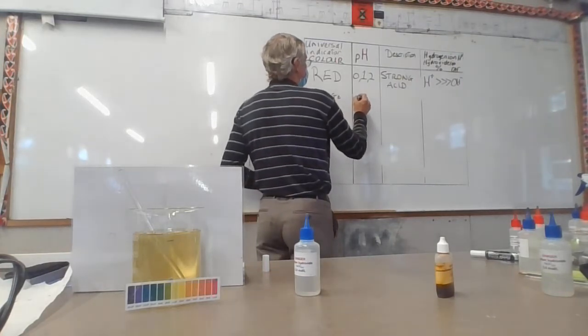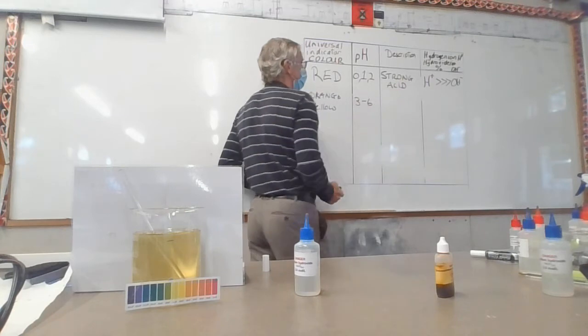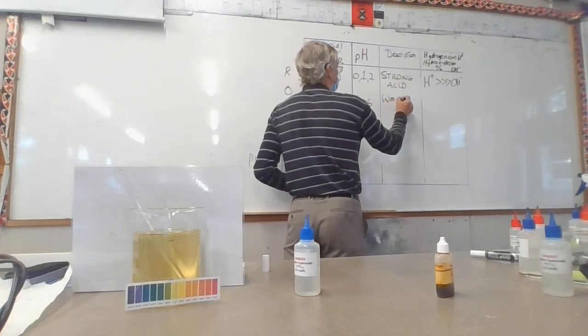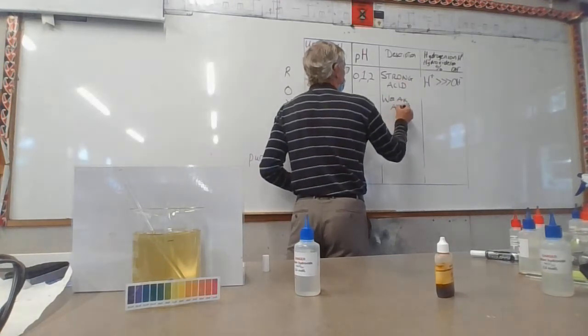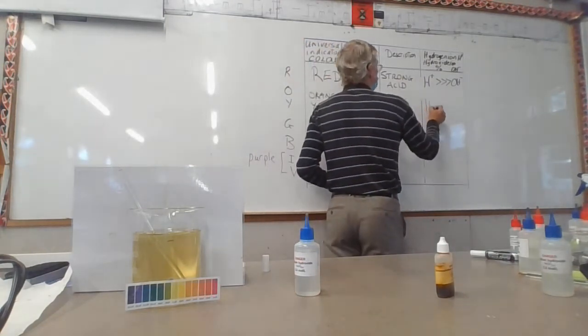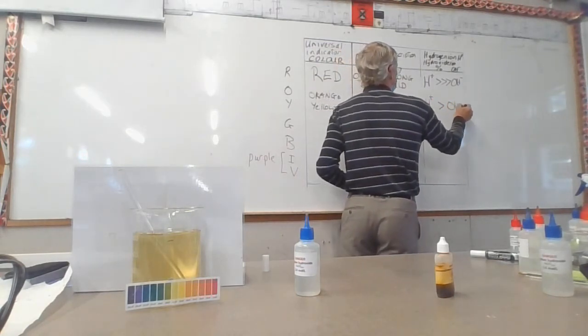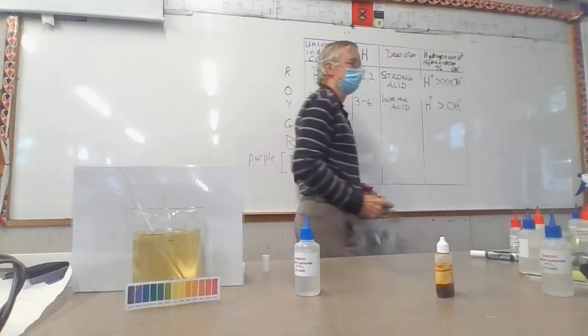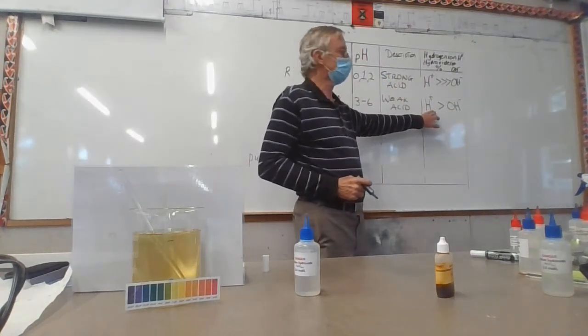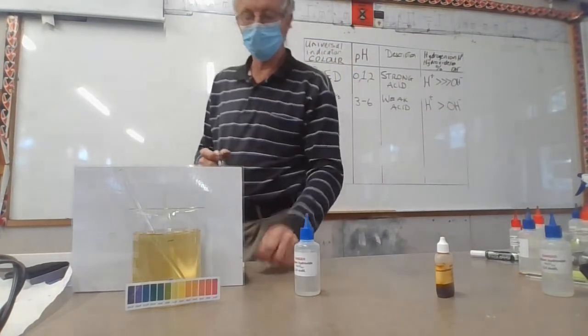They show a pH of 3 to 6, and these are described as weak acids. The situation with the concentration of the hydrogen ions and the hydroxide ions has got much closer together. It may be as little as 5 or 10 times as much hydrogen ions as hydroxide, but definitely still more hydrogen ions, making it more acidic.